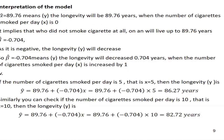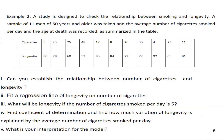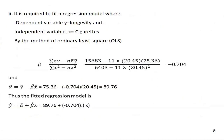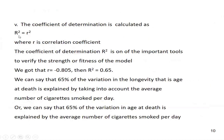Let us see the next question — question number four: find the coefficient of determination and from there make the comment: how much variation of longevity is explained by the number of cigarettes smoked per day? The coefficient of determination is very easy to find if you know the value of r. It is denoted by capital R squared. If you square the small r — the Pearson correlation coefficient — you can get the value of capital R squared, which is also known as the coefficient of determination.